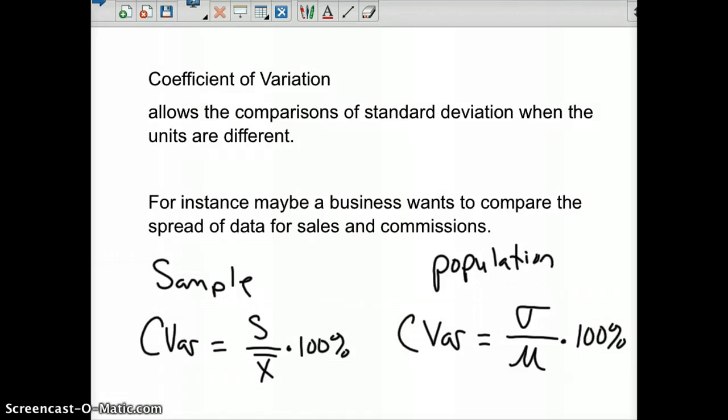So an example we give you would be, for instance, maybe a business wants to compare the spread of the data for sales of boats and the commission rate that they're paying their employees. So it'd be tough to do that on their own merit because they're different variables.